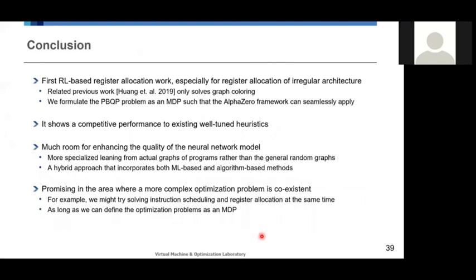To conclude, it was the first RL-based register allocation work, especially for register allocation of irregular architecture like ATE. And it shows a competitive performance to existing well-tuned heuristics as the experiment shows. And we believe that there's much room for enhancing the quality of the neural network model, so we're believing that there can be a huge enhancement as well.